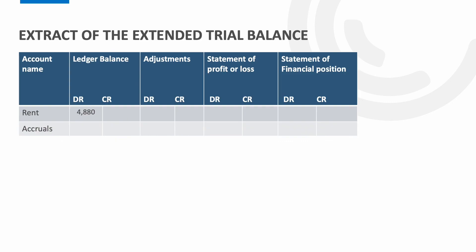Finally, here is how this looks in an extended trial balance using case study two. The rent has an existing balance of £4,880. The accrual is entered within the adjustments columns — debit to show the increase to the rent account and credit to show the accrual. The existing balance plus the adjustment is then transferred to the profit or loss, and the accrued expense is shown as a liability within the statement of financial position.